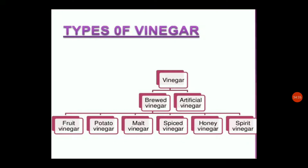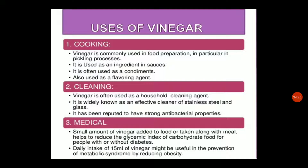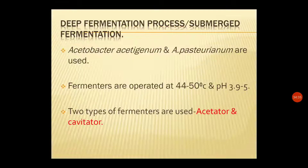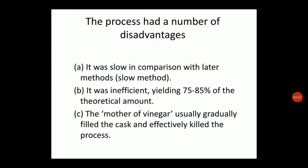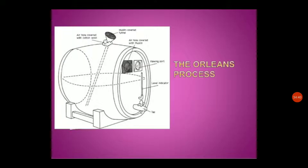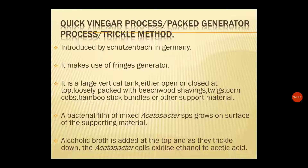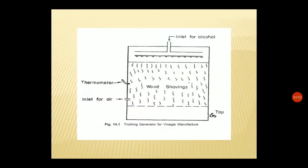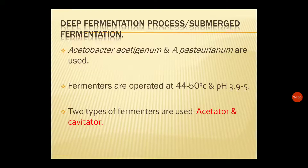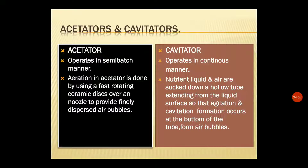To summarize, the three methods used for vinegar production are: the Orleans process, also called the slow process; the trickle method using the Frings generator; and submerged fermentation using the Acetator and Cavitator.